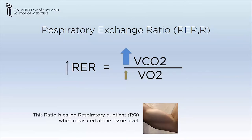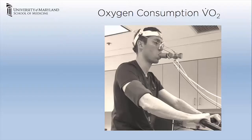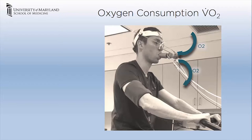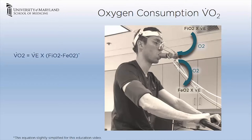Oxygen consumption is an important parameter used in the interpretation of CPET. It is the difference between the oxygen taken in during inspiration and the oxygen breathed out. The total amount of oxygen in a minute is the product of minute ventilation and fractional concentration of oxygen in the inspired gas. The total amount of oxygen expired is the product of the mixed expired oxygen concentration and minute ventilation. FiO2 and FeO2 can be easily measured with a gas analyzer at the mouth. Thus, V̇O2 is calculated from minute ventilation, FiO2, and FeO2. V̇O2 is expressed as liters per minute, milliliters per minute, or adjusted for weight as milliliters per kg per minute. We monitor V̇O2 throughout the test and determine the peak V̇O2 value.